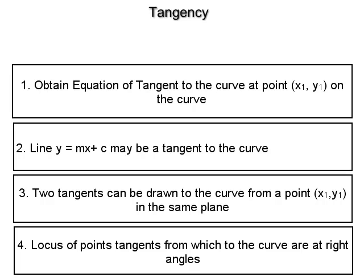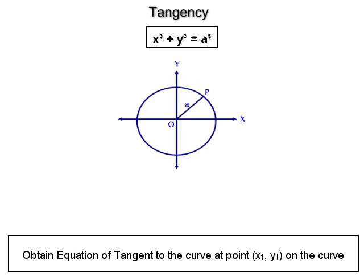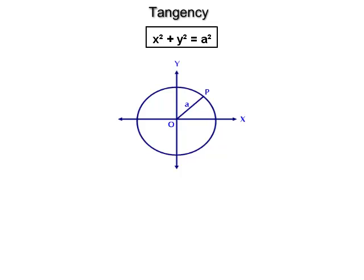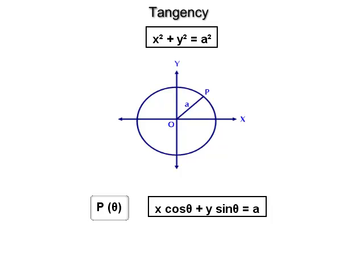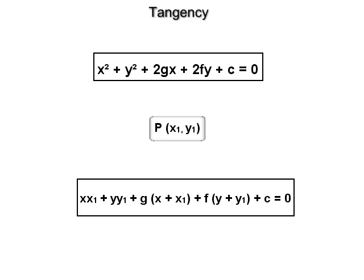Applying these four points to a circle: (1) The equation of the tangent to the standard circle x² + y² = a² at P(x₁, y₁) on it is xx₁ + yy₁ = a². The equation of the tangent at P(θ) on it is x·cosθ + y·sinθ = a. The equation of the tangent to the general circle x² + y² + 2gx + 2fy + c = 0 at P(x₁, y₁) is xx₁ + yy₁ + g(x + x₁) + f(y + y₁) + c = 0.